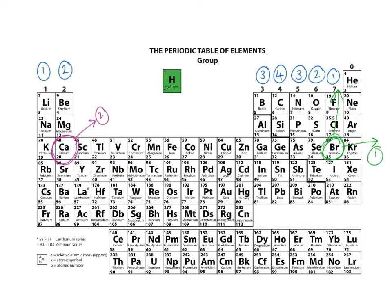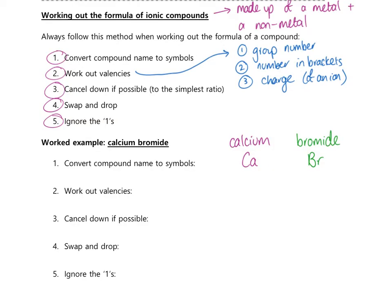Let's write those valencies into our working for step two. We said the valency of calcium was two, and I normally write that in the top right-hand corner of the metal symbol. Then with bromine, the valency is one, and I normally write that in the top left-hand corner with a circle around it, so that those two numbers are beside each other for our working out.